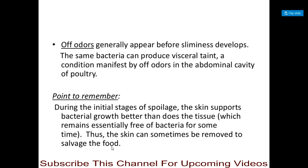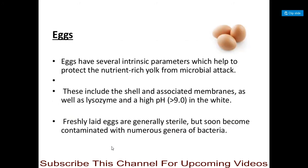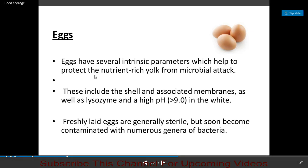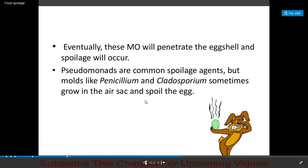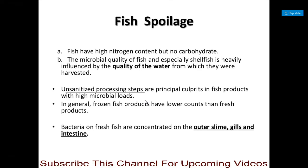Eggs have many intrinsic factors that protect the nutrient-rich yolk from microbial attack, including the shell, associated membranes, lysozyme, and a high pH in the egg white. Freshly laid eggs are generally sterile but soon become contaminated with numerous genera of bacteria, which eventually penetrate the egg shell and spoil the egg. Pseudomonas is the most common spoilage agent, but molds like Penicillium and Cladosporium can sometimes grow in the air sac and spoil eggs.